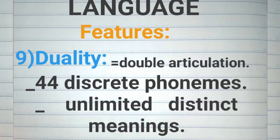Number nine, duality or double articulation means two separate layers of language working together to provide us with a pool of sounds which we can combine to communicate with one another. We have unlimited discrete sounds which can give us unlimited distinct meanings when we combine them.